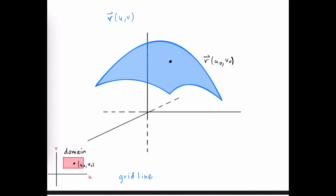A grid line is a line on the surface that we get when we hold one of the variables constant. If we hold u constant at u₀, the only variable remaining is v, and all domain elements along that line map to a grid line on the surface. Similarly, if we hold v constant, all domain elements along that constant v line map to another grid line on the surface.